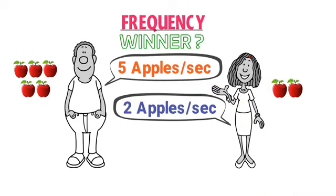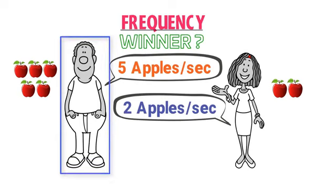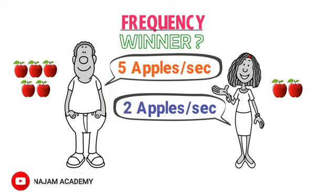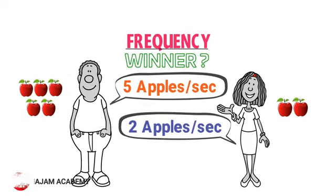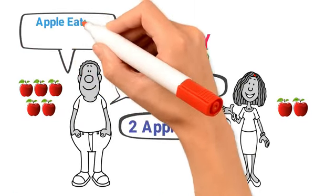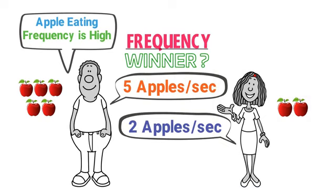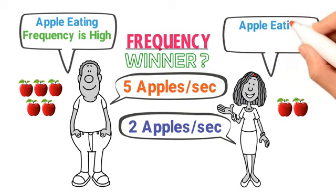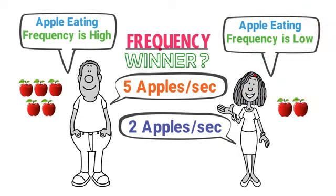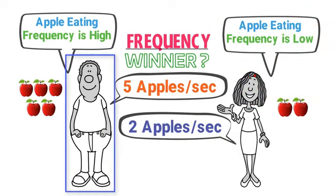Thus the winner is John. John eats five apples per second, so his apple-eating frequency is high compared to Uzma. While Uzma only eats two apples per second, her apple-eating frequency is low compared to John.